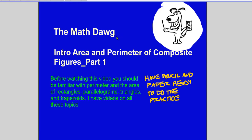Hello, the Math Dog here. In this video I'm going to look at an introduction to area and perimeter of composite figures — I'll call this part one. A composite figure is a figure formed by two rectangular sections, or a triangular section and a trapezoidal section, or a parallelogram and something else tacked on to it. Before watching this video you should be familiar with the perimeter and area of rectangles, parallelograms, triangles, and trapezoids.